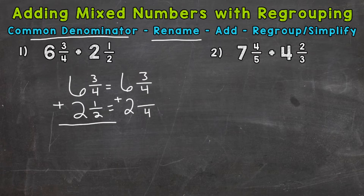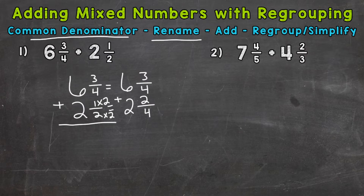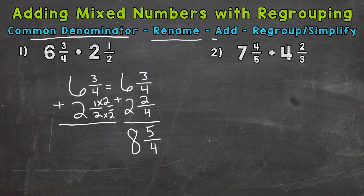Let's rename with that common denominator of four. Six and three-fourths doesn't need renamed — it already has a denominator of four. Plus two and how many-fourths? We need to rename that half so it has a denominator of four, keeping it equivalent. Two times two equals four, so whatever we do to the bottom, we do to the top. One times two is two. Now we're ready to add. Three-fourths plus two-fourths is five-fourths. Six plus two, our whole numbers, is eight. So we get eight and five-fourths.